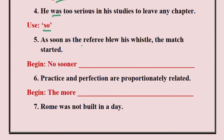Come to sentence number five: As soon as the referee blew his whistle, the match started. You have to start the sentence with 'no sooner'. I have already given you a video on this one — you can check that if you cannot solve it. Be careful: No sooner did the referee blow his whistle than the match started. You have to be careful that you are using 'did', so you will write 'blow', not 'blew'.